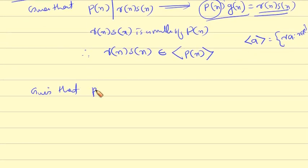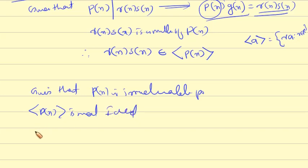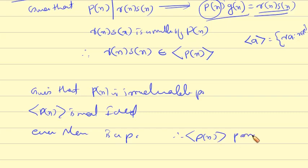Given that p(x) is an irreducible polynomial, we know that the ideal generated by p(x) is a maximal ideal — by Theorem 19. Since p(x) is a maximal ideal, every maximal ideal is a prime ideal. Therefore, the ideal generated by p(x) is also a prime ideal.